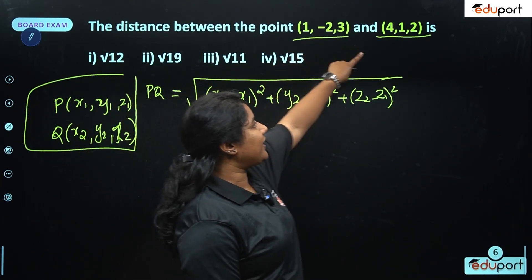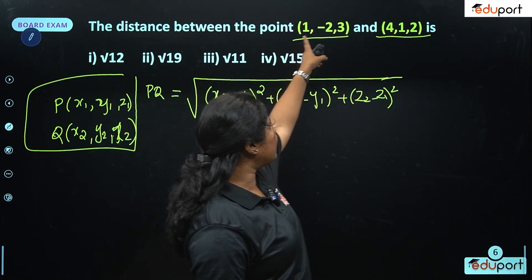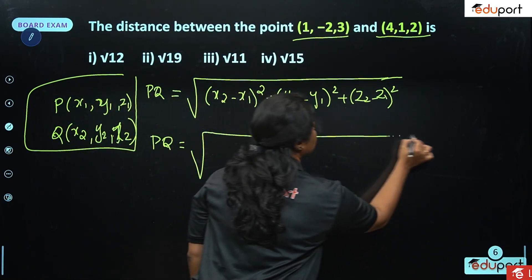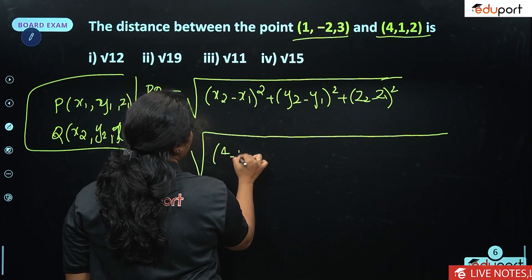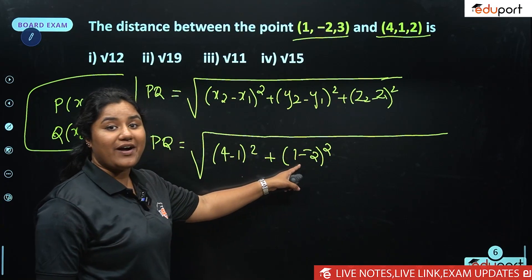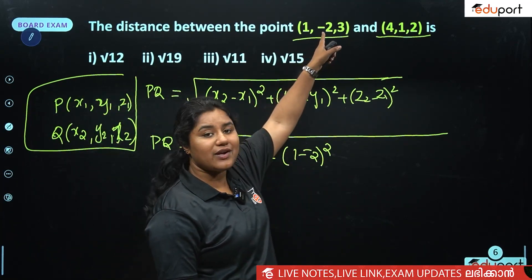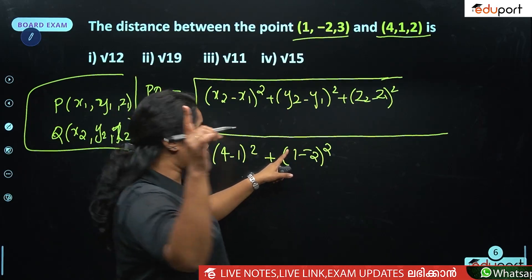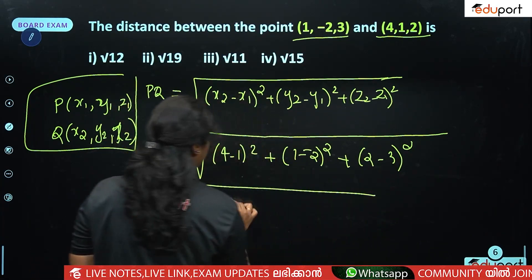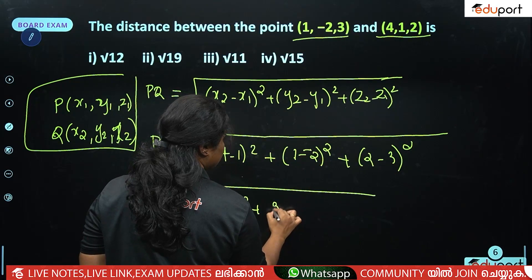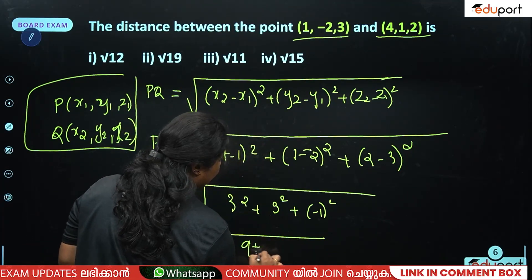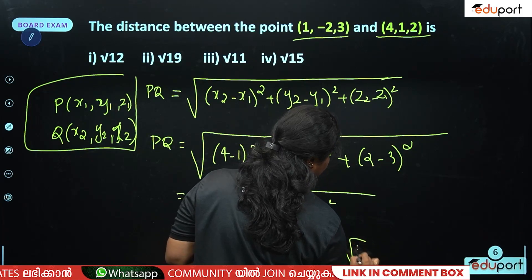Let's apply this directly. For points (1, -2, 3) and (4, 1, 2): PQ = √[(4−1)² + (1−(−2))² + (2−3)²] = √[3² + 3² + (−1)²] = √[9 + 9 + 1] = √19 units.